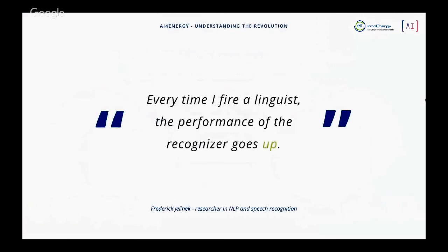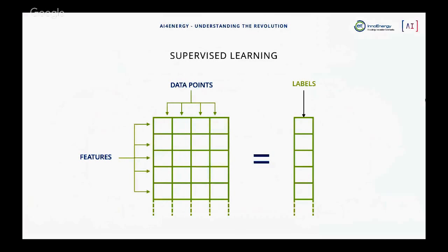A researcher in natural language processing and speech recognition once said that every time he fired a linguist, the performance of the recognizer went up. What he means is that for very complex problems that are hard to explain with specific rules — like human language — applying machine learning and letting the computer figure out the rules by itself is way better than trying to encode them manually. This is how machine learning works, and this is why it is better in certain cases than traditional programming.